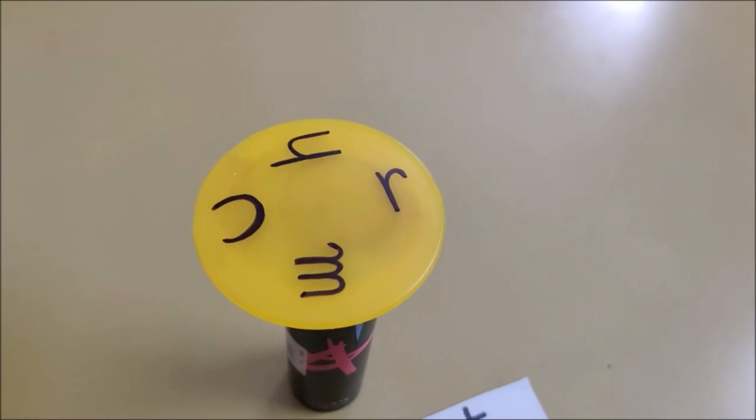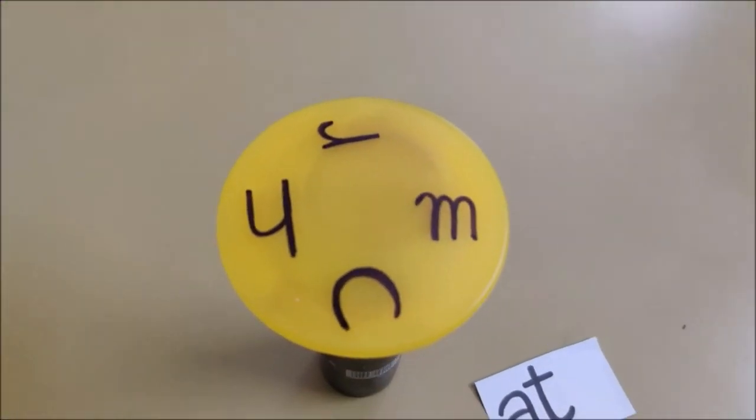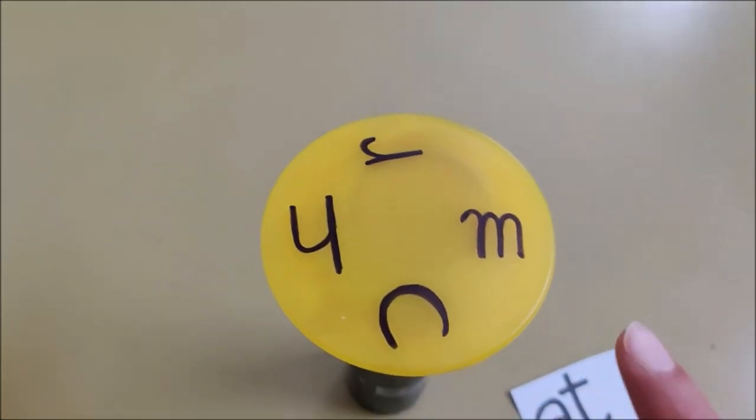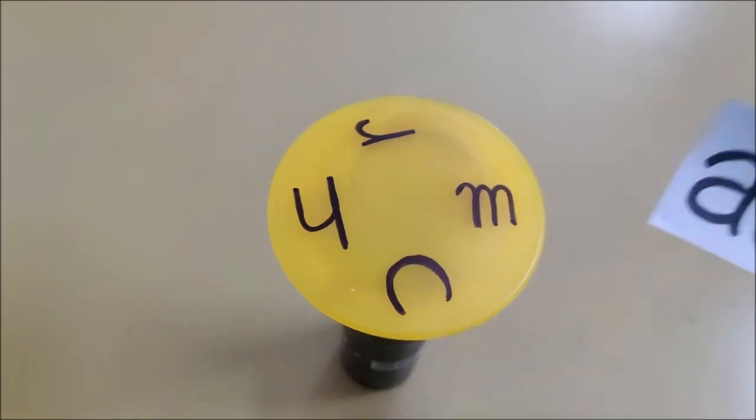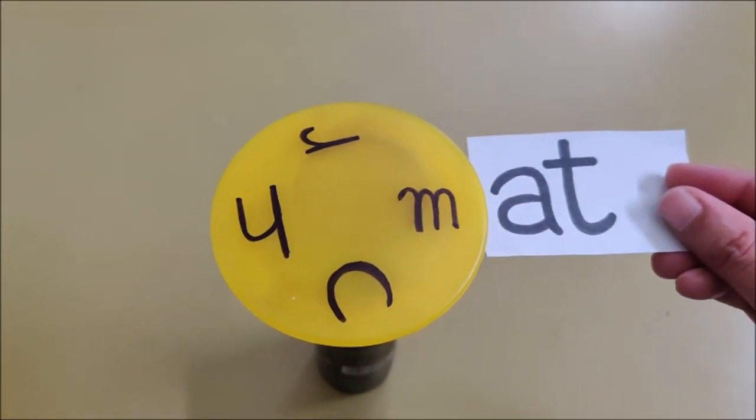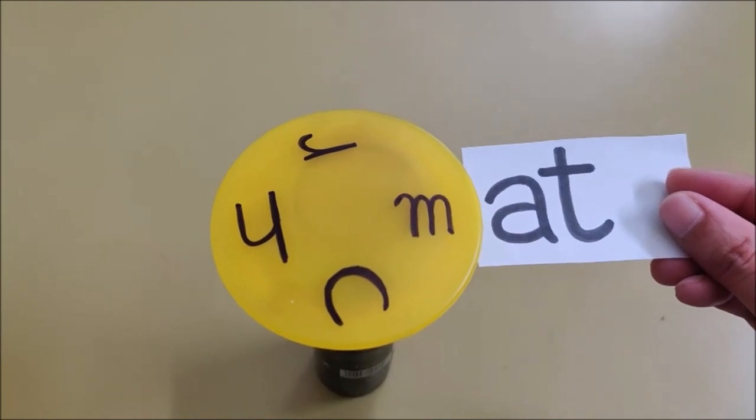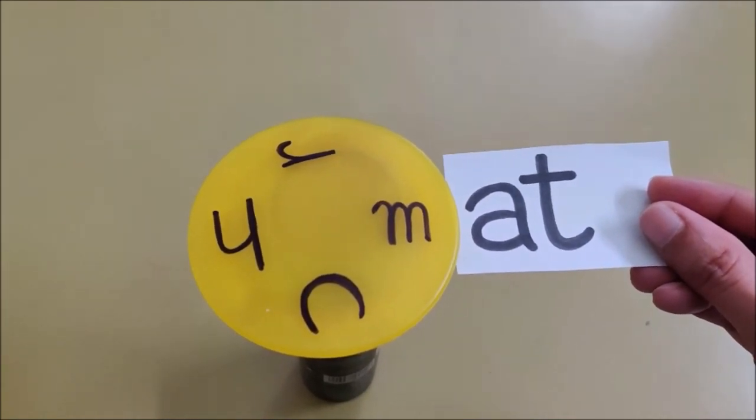Now I am going to spin it again. Spin. Now see, what letter have I got? M. Now I am going to join my 'at' with M and read the word. M, A, T, Mat.